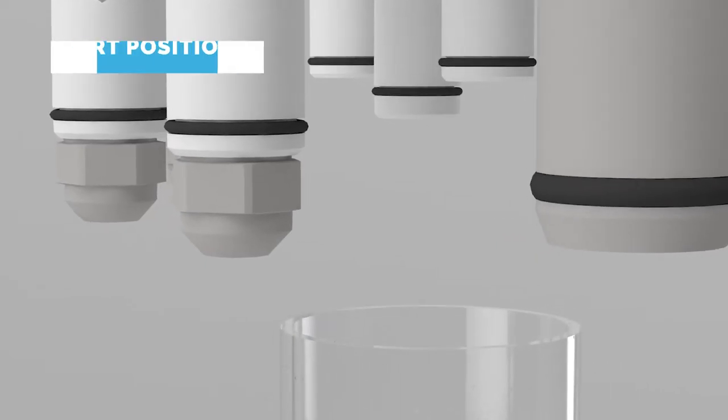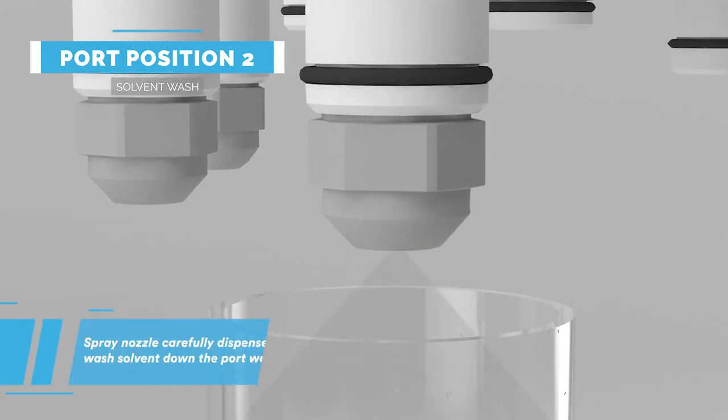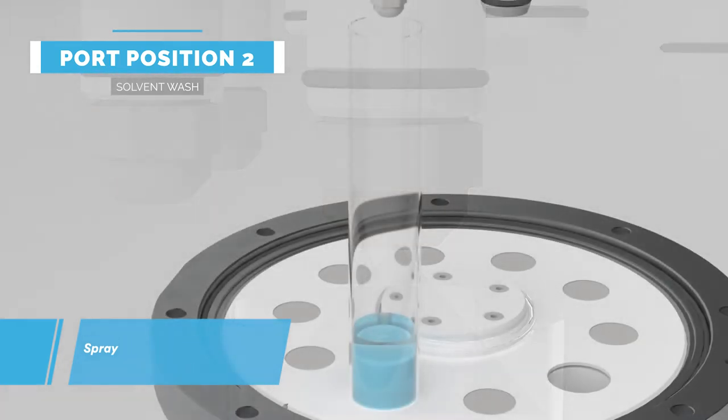The carousel then indexes round to the washing stages. A spray nozzle dispenses wash solvent down the wall of the tube preventing disturbance of the cake.